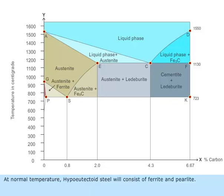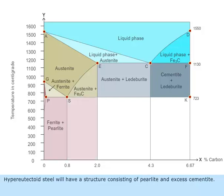At normal temperature, hypoeutectoid steel will consist of ferrite and pearlite. Hypereutectoid steel will have a structure consisting of pearlite and excess cementite.